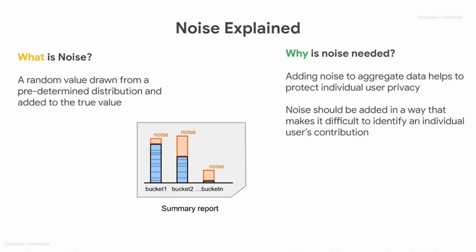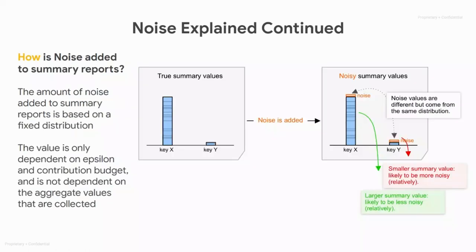The noise in summary reports is added to help protect individual user privacy. It's important that noise is added in a way that makes it difficult to identify an individual user's contributions. The amount of noise added to a summary report is based on a random value from a fixed distribution. It's important to remember the random value is only dependent on epsilon and contribution budget and is not dependent on the aggregate values that are collected.